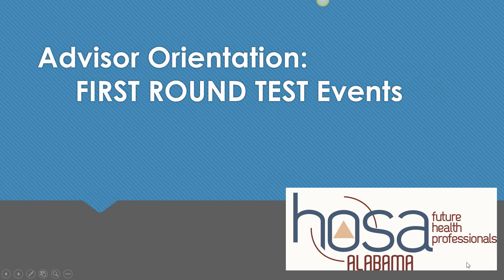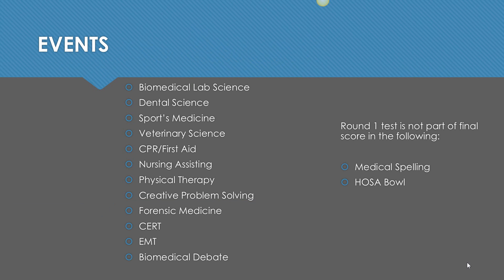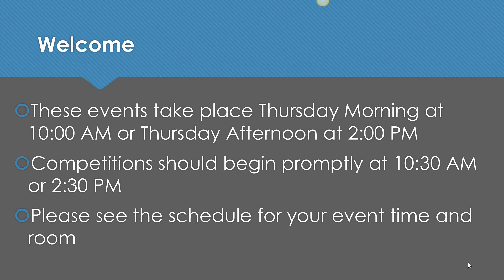This orientation is for advisors that are running first-round test events. The events on the left are first-round test events where the test score is added to the skill or action score to get the final top six. On the right, Medical Spelling and HOSA Bowl, the round one test score is not part of their final scoring. These events take place Thursday morning or Thursday afternoon at 10 and 2, with competitions beginning approximately 30 minutes after your orientation. Please see your event schedule for time and room.